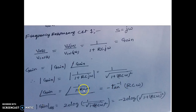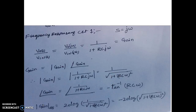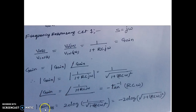The imaginary coefficient is RCω, and the real coefficient is 1. Since this term is in the denominator, the phase is minus tan⁻¹(RCω / 1). We can also express the gain in dB, which is 20 log of that magnitude, and can be written as minus 20 log of the square root of (1 + (RCω)²). This gives the magnitude in dB and phase in degrees.